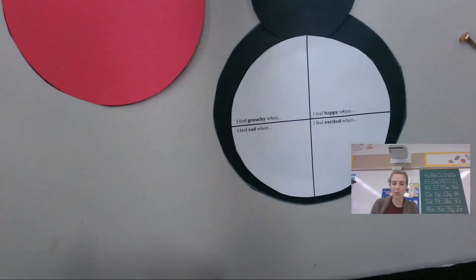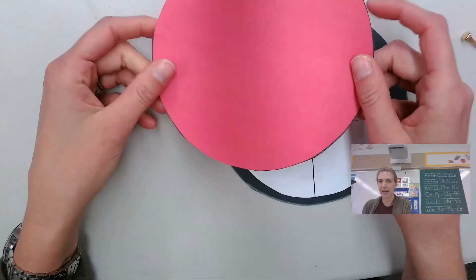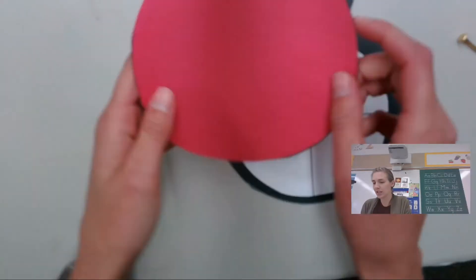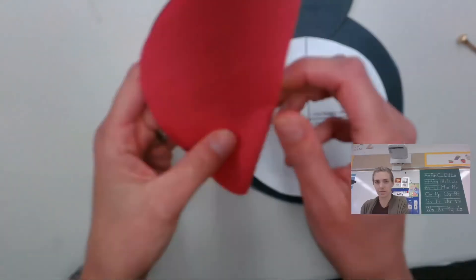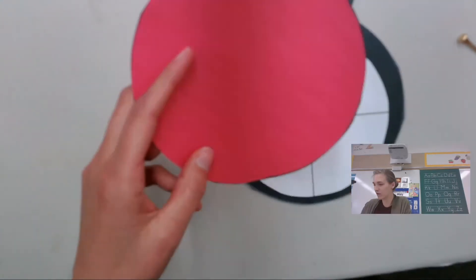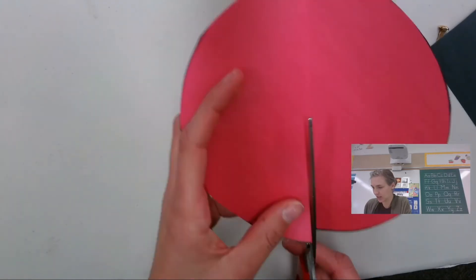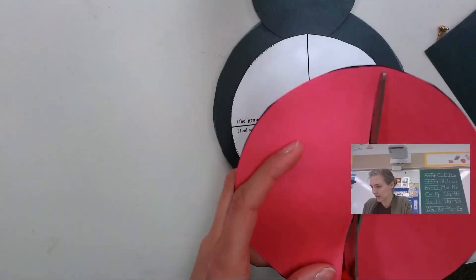Now for the wings of the butterfly, you're going to take the red circle. You're going to fold it in half. Then you're going to cut down that folded side. Cut, cut, cut.